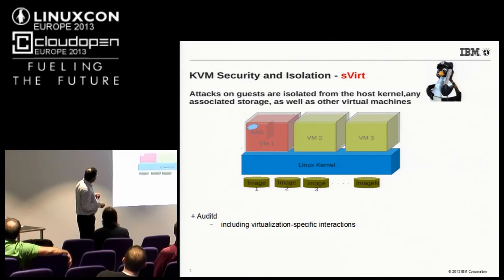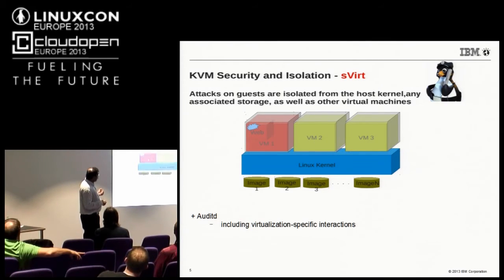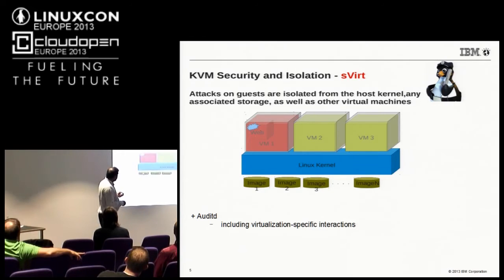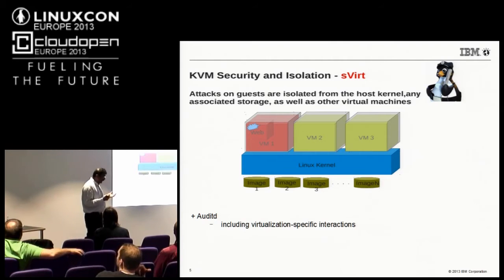Here's how SELinux works: your KVM hypervisor is part of the Linux kernel and you have three virtual machines on it. If for some reason code running in one virtual machine attacks and embeds itself in that VM, SELinux in combination with sVirt ensures that this particular virtual machine is not able to attack another VM or the host OS. It also ensures that one VM cannot write to the virtual machine image of another VM.